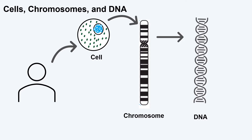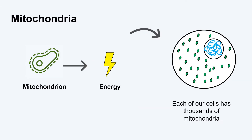DNA tells our bodies how to develop and function. Each instruction is called a gene. In addition to our nucleus that contains most of our DNA, represented by the blue in the inner circle, our cells also contain other structures called organelles.